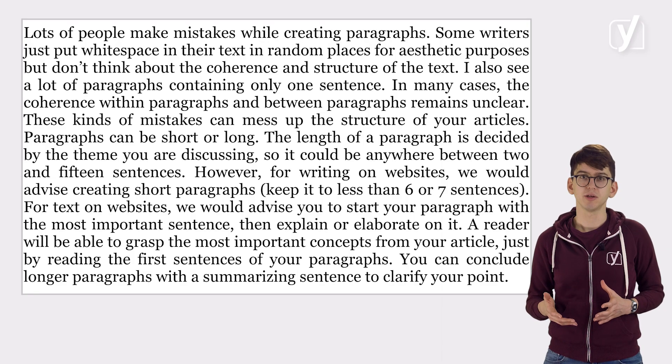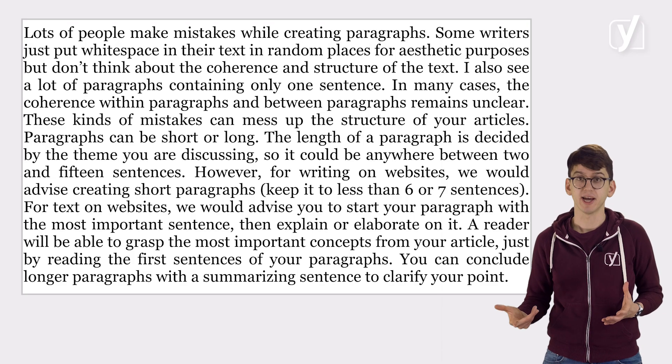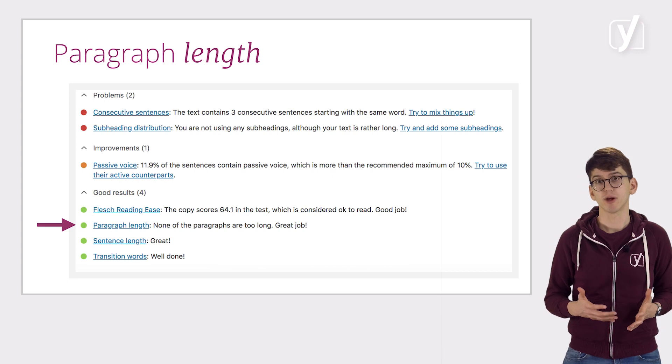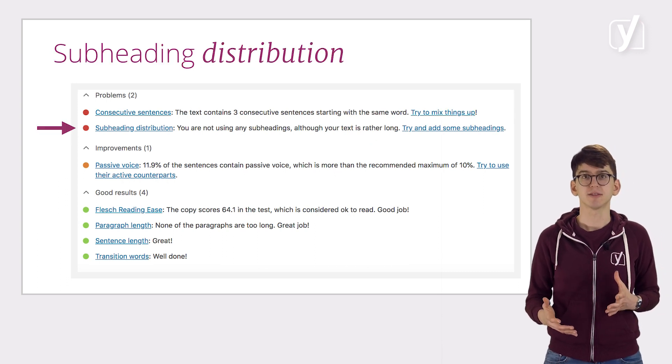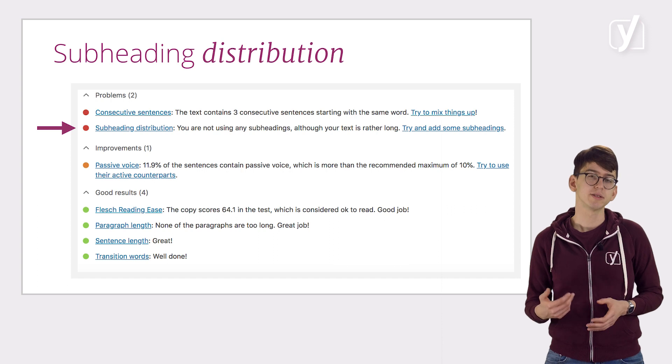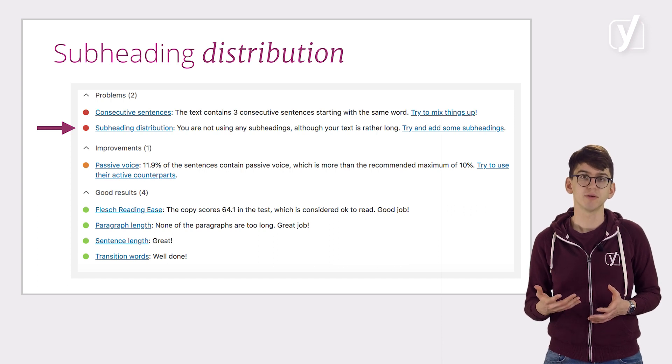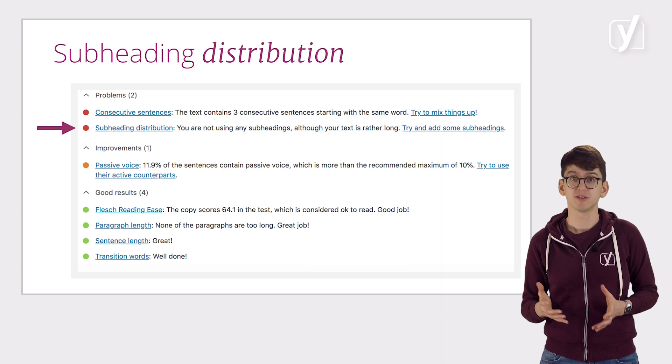When you connect sentences and organize them into bigger thematic units, you'll be building paragraphs. Having a good paragraph structure is crucial, especially for reading on screen. When you're reading on a screen, you don't want to be confronted with a big wall of text. That's why we check if your paragraphs are too long. We also check whether the text has enough subheadings, which are important to guide the reader through the text and show them what the important points are.